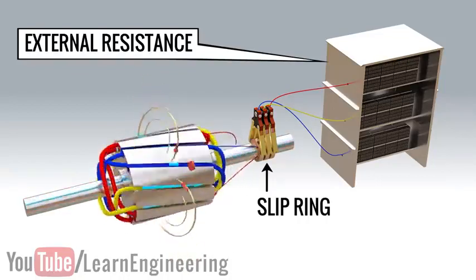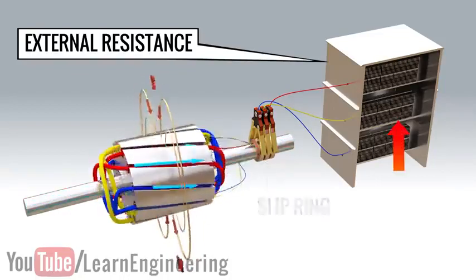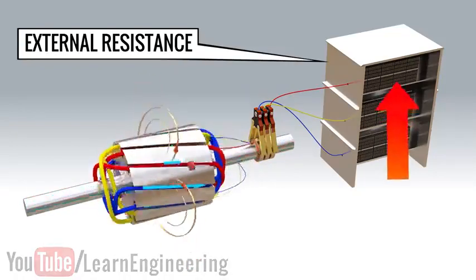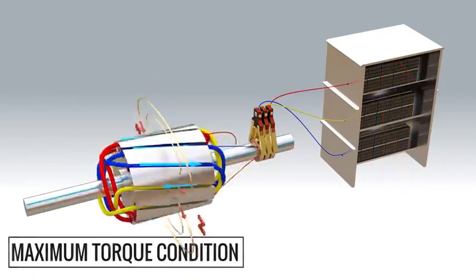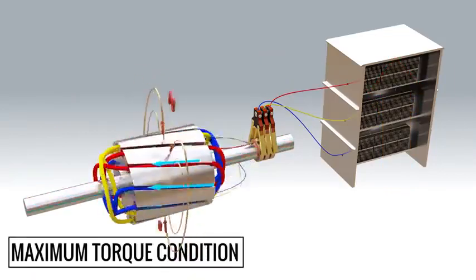As a slip ring induction motor starts, the external resistance value is increased. This reduces the phase difference angle and the current induced approaches the maximum torque condition.